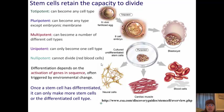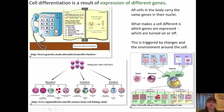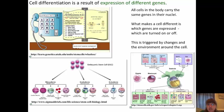For example, once the totipotent cell has progressed from a fertilized egg to an eight-celled embryo, these cells are only pluripotent — we no longer have totipotent cells. Cell differentiation is a result of the expression of different genes. All cells in the body carry 100% of the same genes in their nucleus, but what makes one cell different from another is which genes are expressed — which are turned on or off — and this is triggered by changes in the environment around the cell.